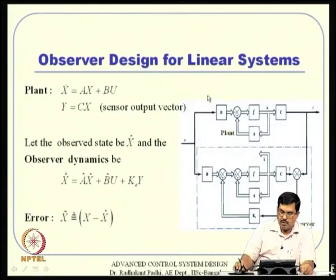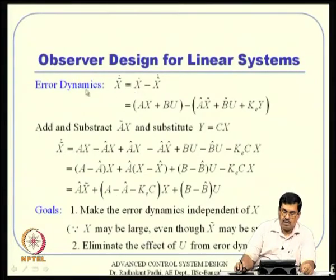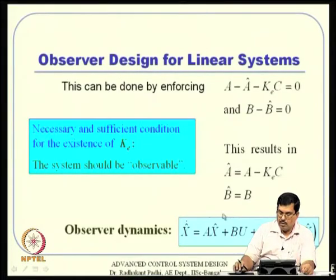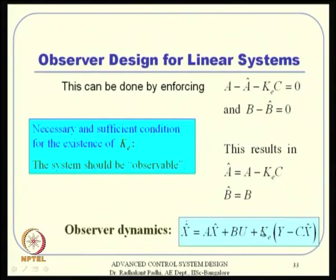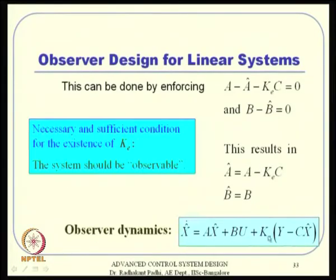In observer design for a linear system, we have a system plant and we propose that observer dynamics be constructed with K_e as an estimator gain. We discussed the error X tilde = X minus X-hat, where X-hat is the estimated state and X is the true state. We go through the error dynamics and enforce certain coefficients to be zero so that X-tilde-dot is not a function of state and control, deriving the observer dynamics of the form A*X-hat + B*U + K_e*(Y - C*X-hat). That last term is the innovation.